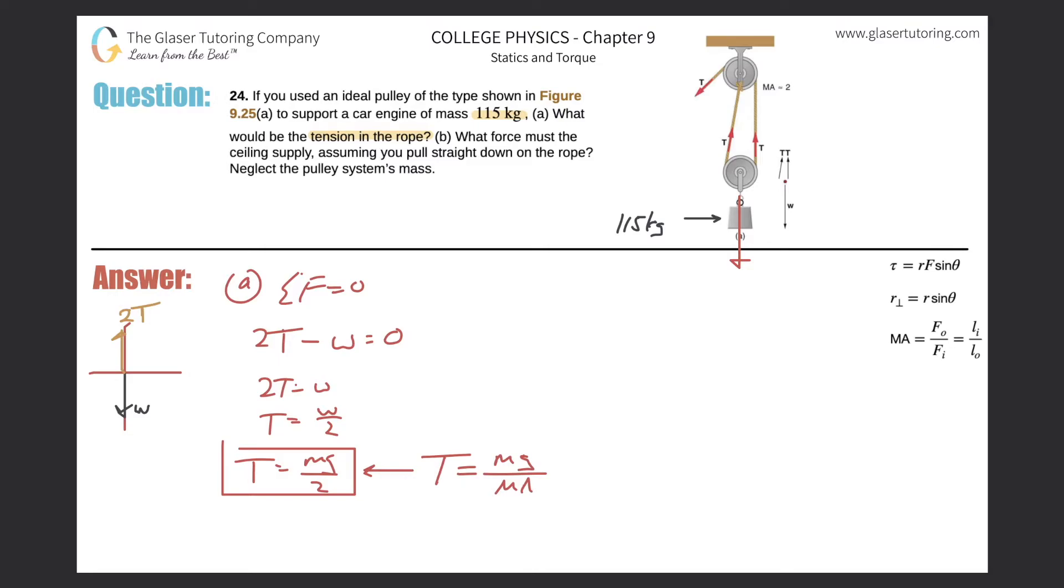This is the general formula that it would be good to know. The mechanical advantage here, I mean they told us in the problem that it's 2, but it will equal the number of essentially tensions or vectors that represent the tension that oppose the weight vector.